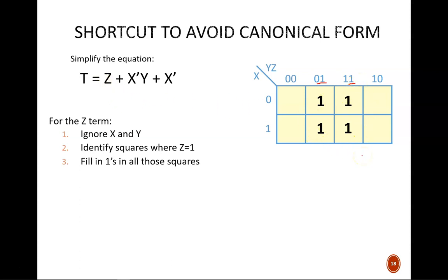In general, the simpler the product term, the more squares we can fill in. This makes sense, right? Since X and Y are not part of this term, that means they can be either 0 or 1, which covers more squares in the map.